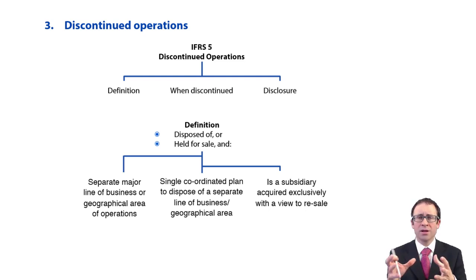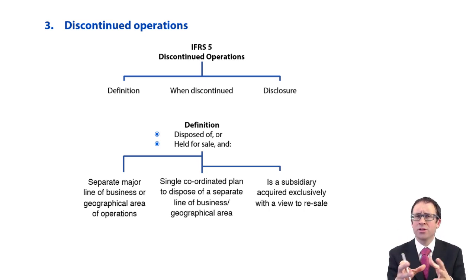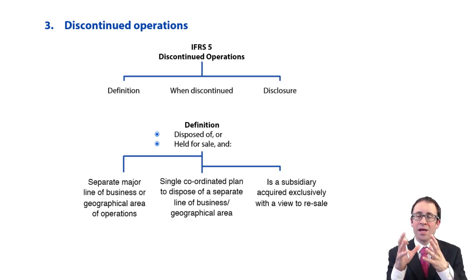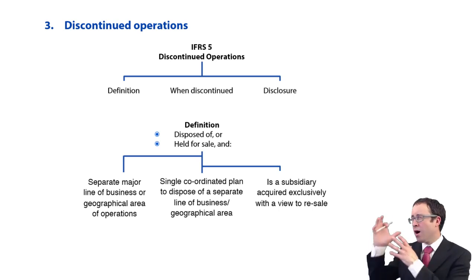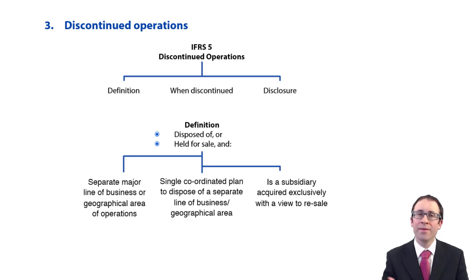Just be aware that when we're looking at a discontinued operation it does need to be a major part of your business, because therefore it needs to be material. It should also be part of one single plan, or alternatively maybe it's a subsidiary you bought with the idea of quickly turning it around due to poor performance with a view to then selling it. For our exam purposes in F3, we're looking at it being a separate major line of business in a single coordinated plan that is being disposed of.